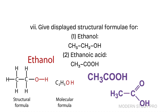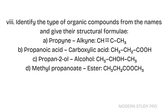Short Question 7: Give displayed structural formulae for: 1. Ethanol and 2. Ethanoic acid. Short Question 8: Identify the type of organic compound from the names and give their structural formula. A. Propane — alkane. B. Propanoic acid — carboxylic acid. C. Propan-2-ol — alcohol. D. Methylpropanoate — ester.